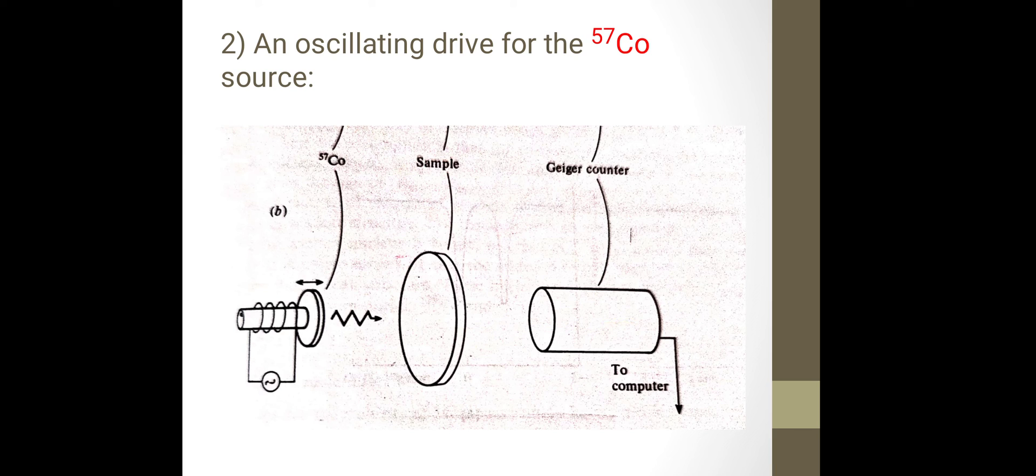The Geiger output is given to the multichannel computer. In the computer, the results from each point of the source movement are collected and summed over each cycle. A time of several minutes to a few hours is usually sufficient to record a good spectrum.